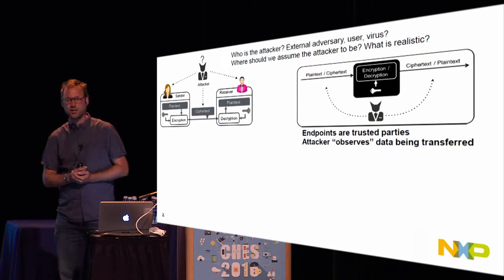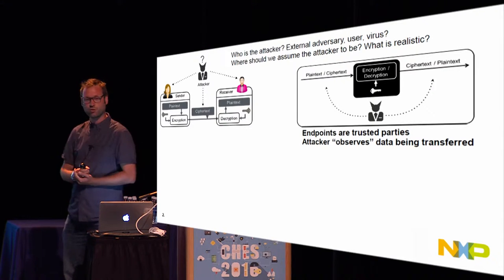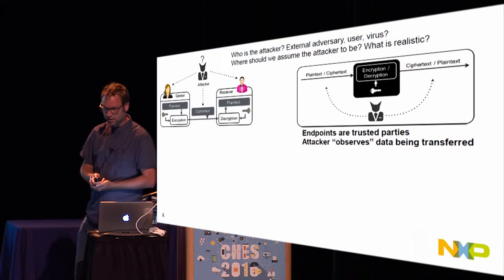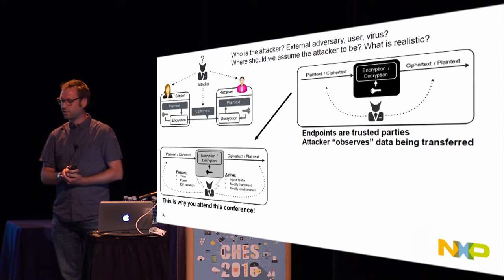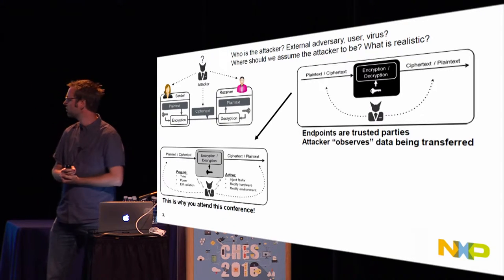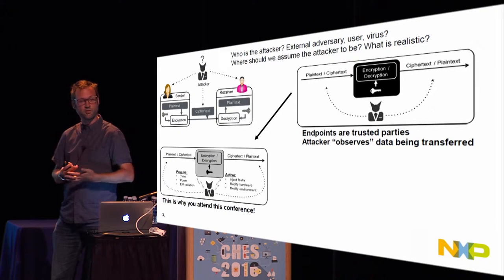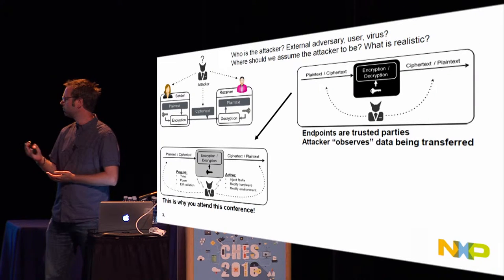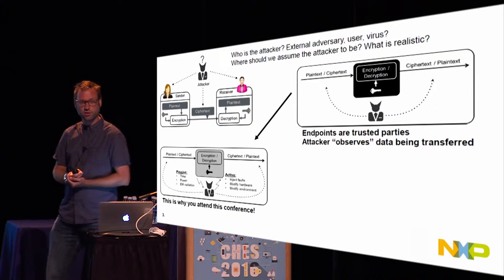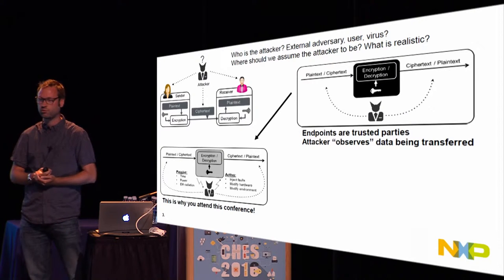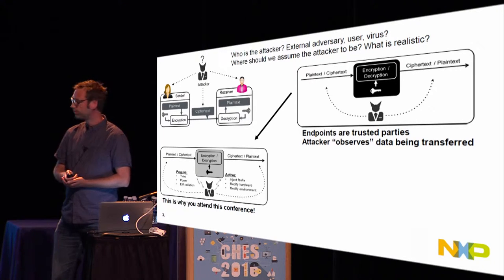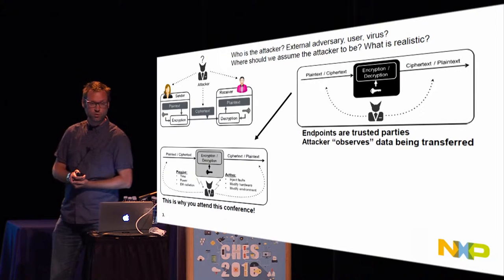We are all familiar with the black box model from the 80s — you have two trusted endpoints and the adversary just observes the data being transferred. Things advanced: there were hardware implementations, the user could have a smart card in their own hands, and the adversary could use passive or active attacks to extract meta information from the cryptographic hardware implementation to extract the secret key. That's why we're here at CHES.